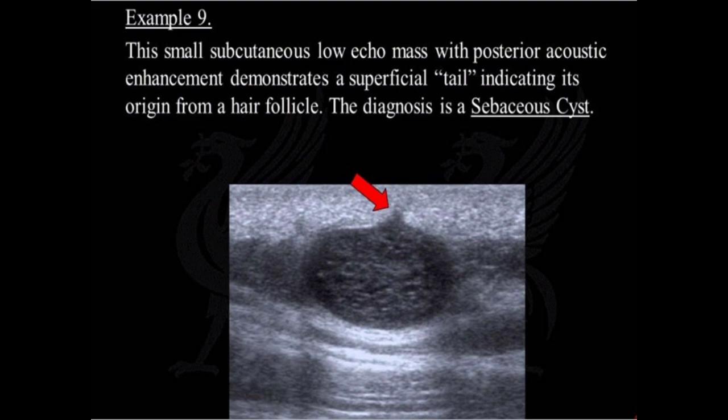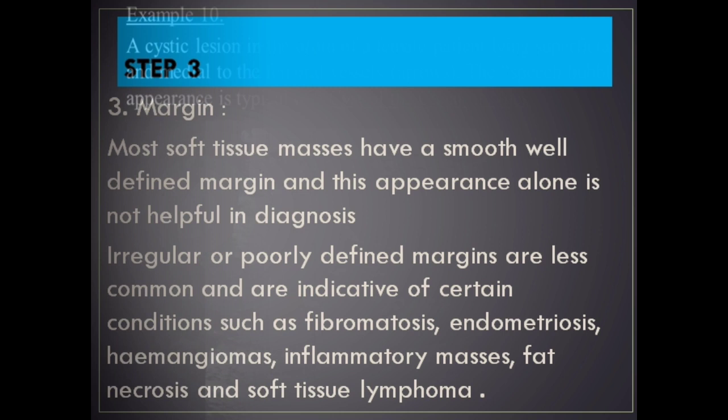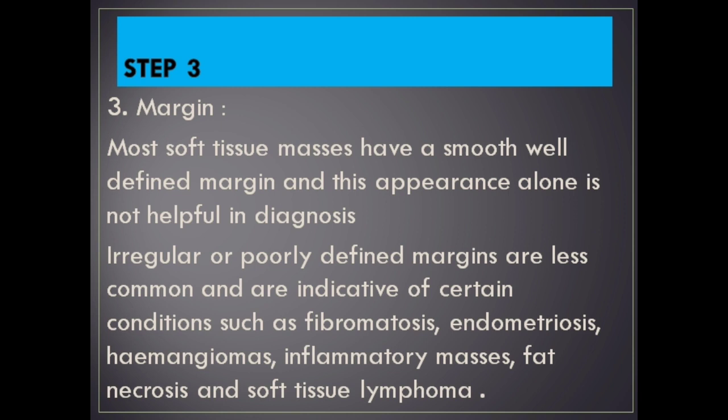Example 10: A cystic lesion in the groin of a female patient lying superficial and medial to the femoral vessels — the speech bubble appearance is typical of a cyst of the canal of Nuck. Margin: Most soft tissue masses have a smooth, well-defined margin, and this appearance alone is not helpful in diagnosis. Irregular or poorly defined margins are less common and are indicative of certain conditions such as fibromatosis, endometriosis, hemangiomas, inflammatory masses, fat necrosis, and soft tissue lymphoma.